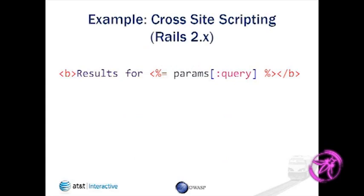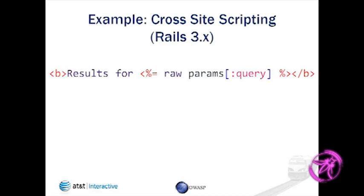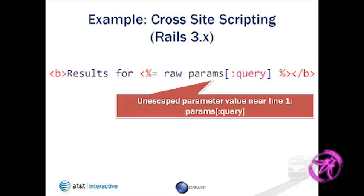Here's an example — a template using ERB, the default template. We're saying please put this query parameter into the page. For Rails 2.0 this would be a cross-site scripting vulnerability. In Rails 3, they escape by default. So in Rails 3 you would actually have to do a little more work and say please output this without escaping. If you run Brakeman against code like this, you would get a warning: unescaped parameter value, you get the line number, and the code as Brakeman would see it.